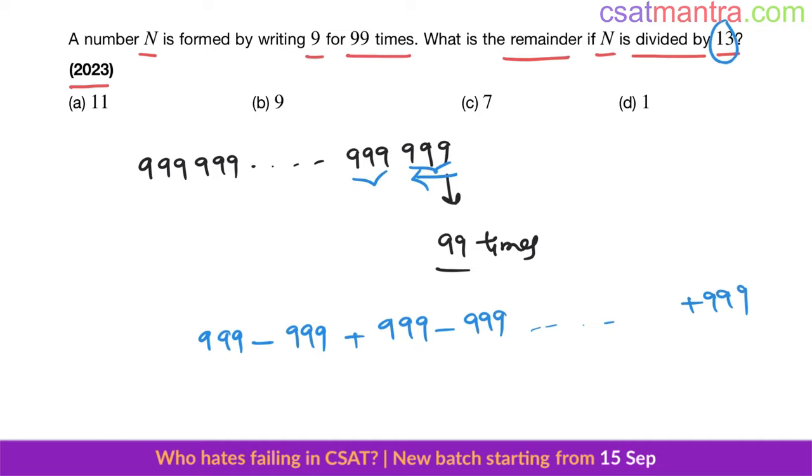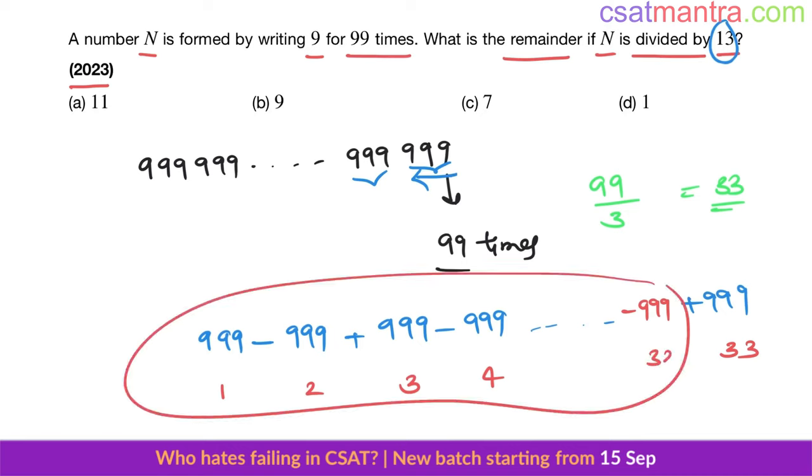Now see, first group, second group, third group, fourth group. This is the 33rd, 32nd will be minus 999. Till this, everything will cancel out. Plus, minus, plus, minus, plus, minus will cancel out. This will be remained.